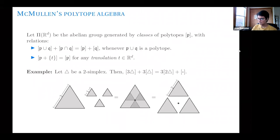Let me introduce first the polytope algebra of McMullen. We're going to be working in R^d. This object, the polytope algebra, is a group generated by classes of polytopes P — we're going to denote them with brackets — and these classes satisfy two relations.